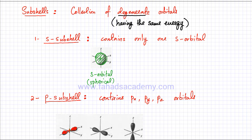Now we've studied orbitals — they're regions around the nucleus where there's a very high probability of finding an electron. There are S, P, D, and F orbitals with different versions. Now we're going to talk about subshells. Subshells are a collection of different degenerate orbitals, meaning orbitals having exactly the same energy level. In a lot of ways they are basically identical orbitals, except the area they cover is different. So a subshell is a group of orbitals having the same energy level.